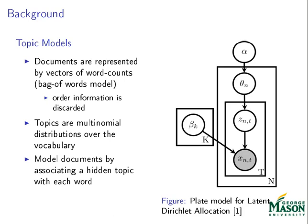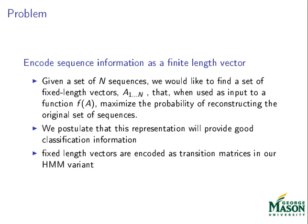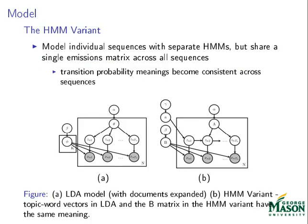We propose a model to represent a set of variable-length sequences as a set of fixed-length vectors. We speculate that if we learn the parameters of a probabilistic model, then these parameters will represent the sequences in a meaningful way. In our HMM variant, we begin by attempting to model each sequence with a separate hidden Markov model, where each sequence has its own transition matrix, as you can see in the plate diagram. Unlike a standard hidden Markov model, we share an emission matrix across all sequences in the dataset. When we add this sharing capability, we produce a model that is very similar to latent Dirichlet allocation, a common topic model. In addition, like latent Dirichlet allocation, we add Dirichlet priors to each of our model parameters.